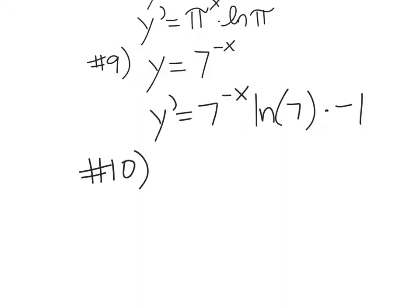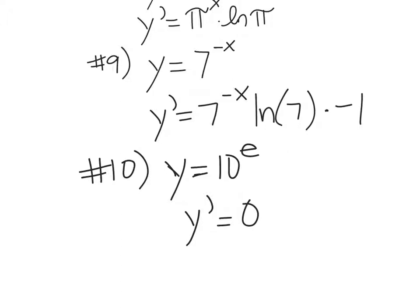Last one: y equals 10 to the e. y prime — what's the answer? Zero. Yes! 10 to the e is just a constant: 10 is a number, e is a number, it's just a number. Make sure when you do these you look at the problem carefully. E is not a variable — it's a number — so 10 to the e is just a constant, and its derivative is 0.